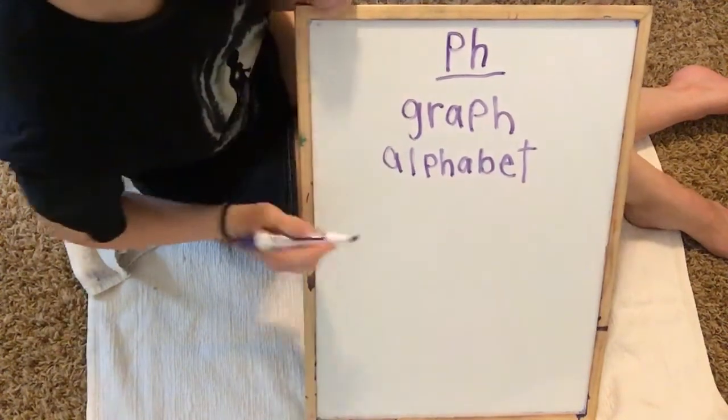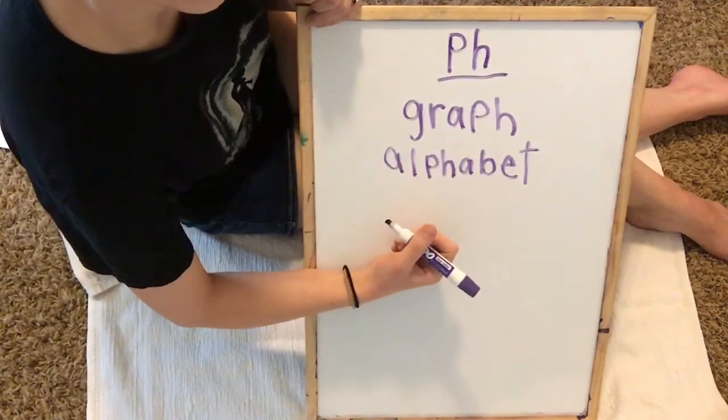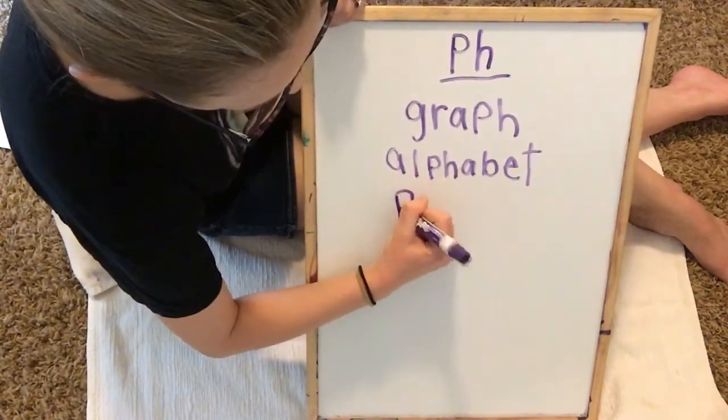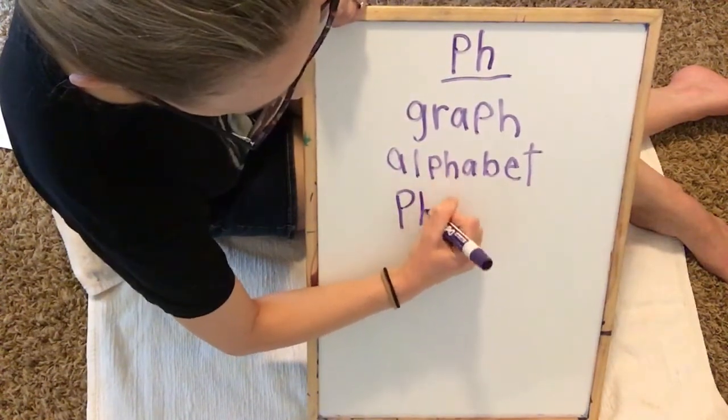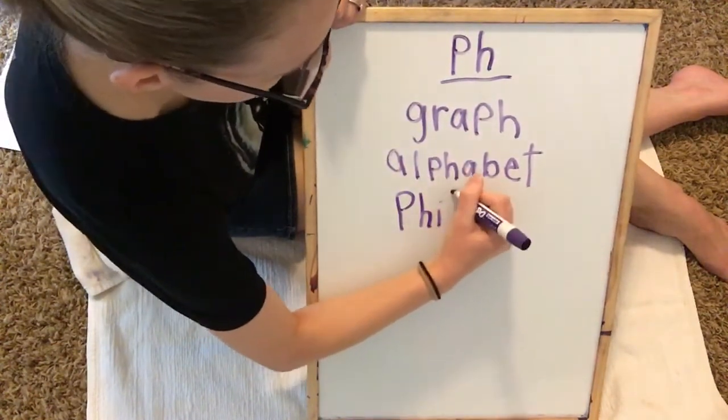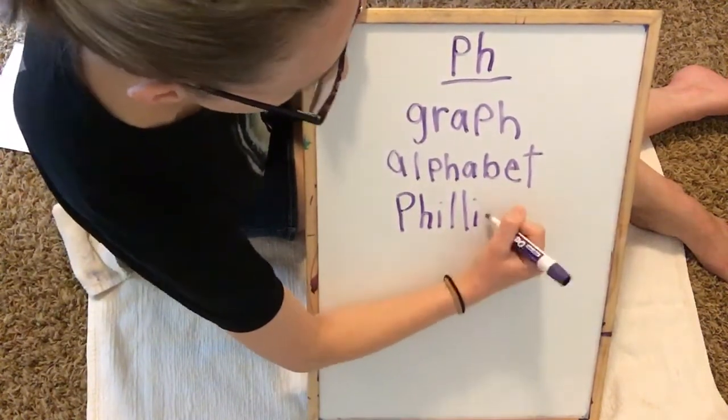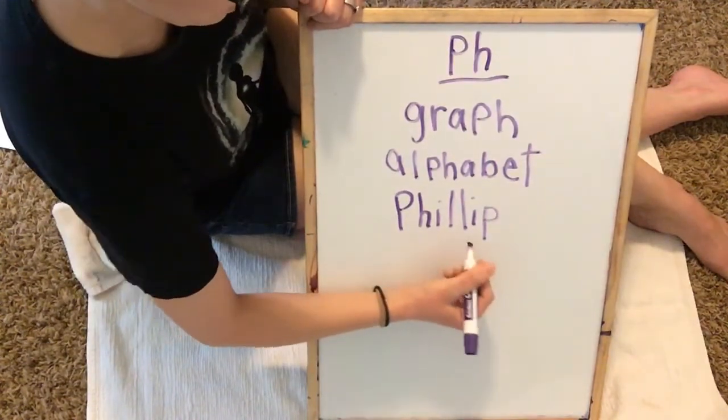Okay, Philip. And Philip is the name of a person, so Philip gets a capital P. F, P, H, I, L, double L. Philip is the name of a person, Philip.